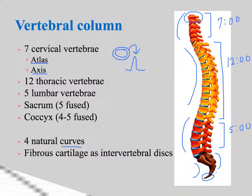The intervertebral discs are made of fibrous cartilage — not hyaline cartilage — which is tougher. They provide shock absorption, protection, and flexibility, allowing you to move your spine in several different directions.